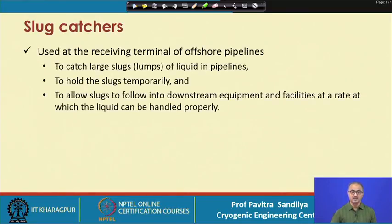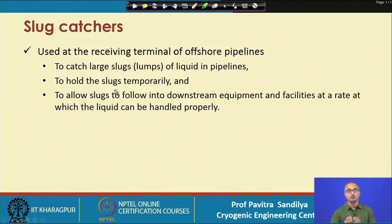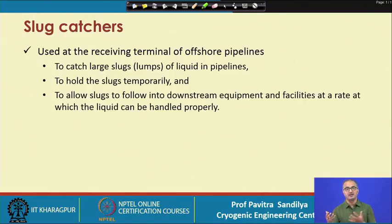Slug catchers are generally used at the receiving terminal of offshore pipelines — when gas arrives onshore from offshore, slug catchers handle water slugs, which are large lumps of liquid in the pipelines. The slug catchers catch and temporarily hold these slugs after separation, then release them to downstream equipment and facilities at a controlled rate that the liquid handling system can manage. This controlled release is necessary because if all slugs were allowed to pass downstream at once, the downstream equipment may not be able to handle them.